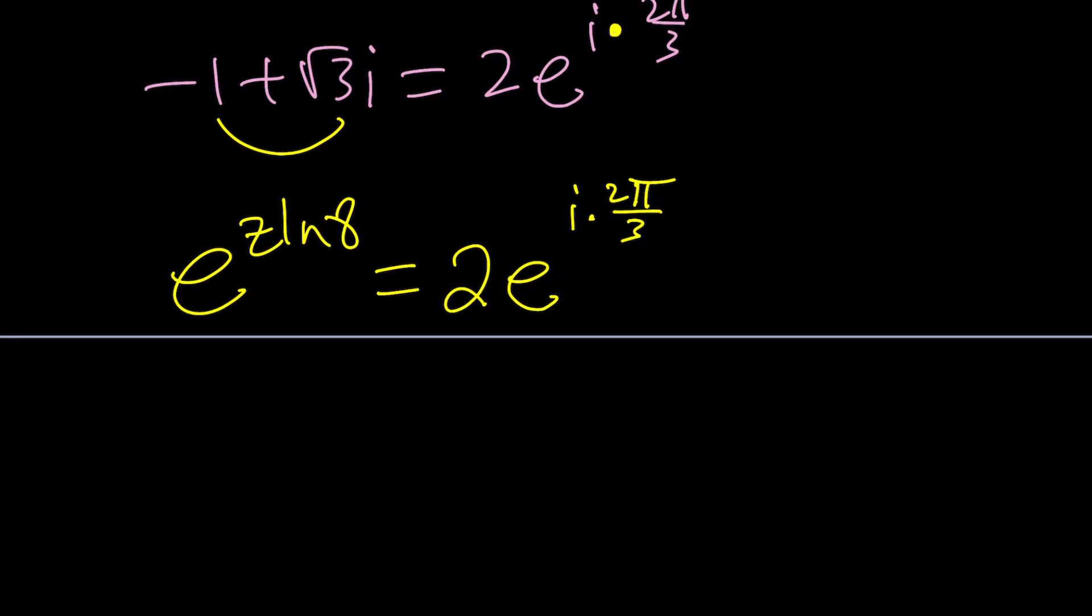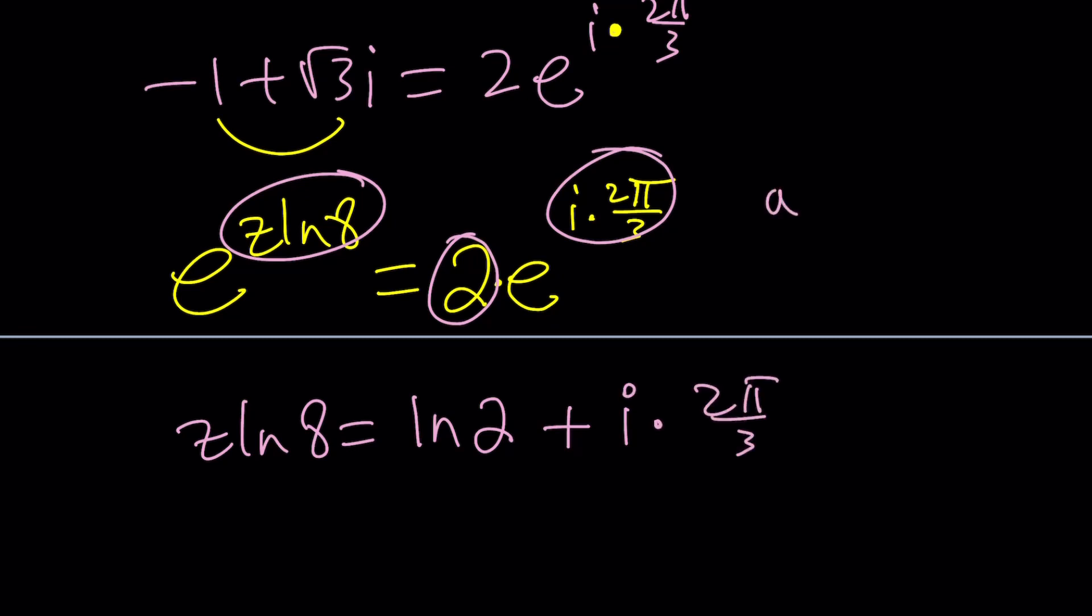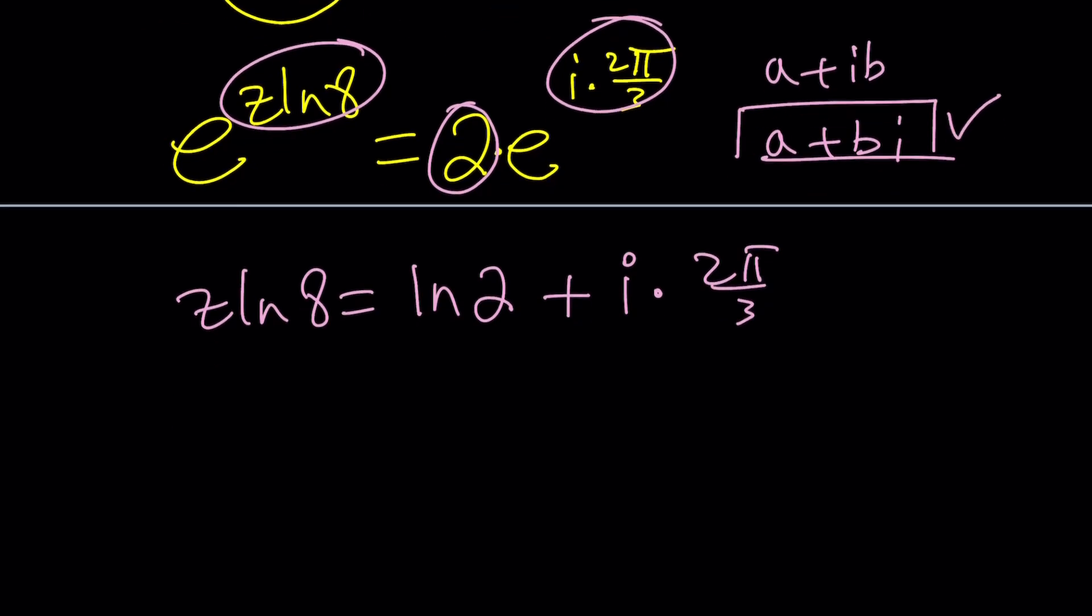So let's go ahead and put it all together. We have e to the power z ln eight on the left hand side, and two times e to the power i times two pi over three on the right hand side. If you natural log both sides, you're going to get this in the front, z ln eight, and you're going to get the log of two, which I write as ln two, plus this one. Because ln of e is one, it's going to be i times two pi over three. And doesn't this look like a plus ib? Some people write it that way, a plus bi, which is the name of this channel.